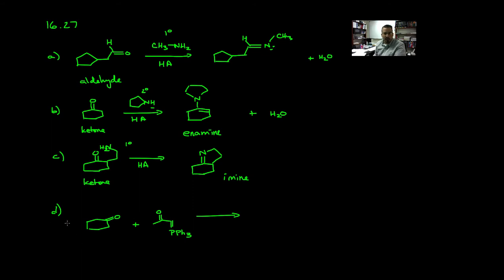Finally, in part D, we're looking at different reaction conditions. We're starting with a ketone and treating that with this phosphorus ylide. These are commonly known as Wittig reagents.